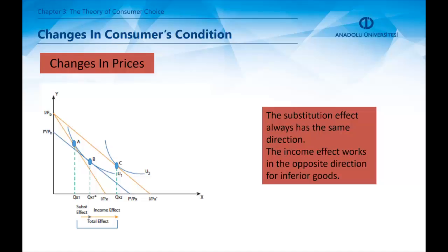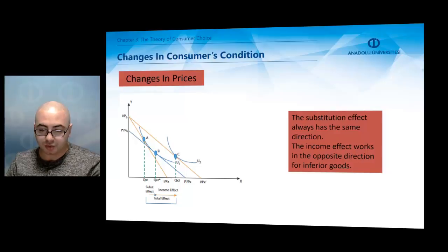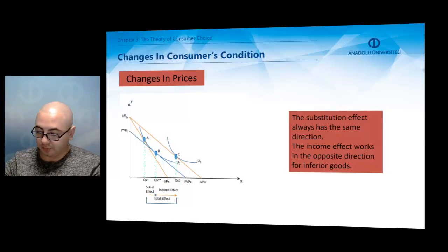There is also the income effect, and that effect causes a shift from point B to point C. Thus, the new optimal point becomes point C. However, income effect works in the opposite direction for inferior goods. The illustration assumes that the good with decreased price is a normal good.